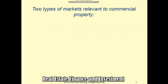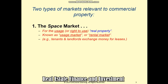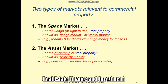There are two types of markets relevant to commercial property. The first is the space market, also known as the usage or rental market, because it represents a market where one party demands a space and the other party supplies it, with money as a medium of exchange — for example, tenants and landlords. The second market is the asset market, also known as the property market, where the main intention of parties is to own real property either for own stay or investment purposes.